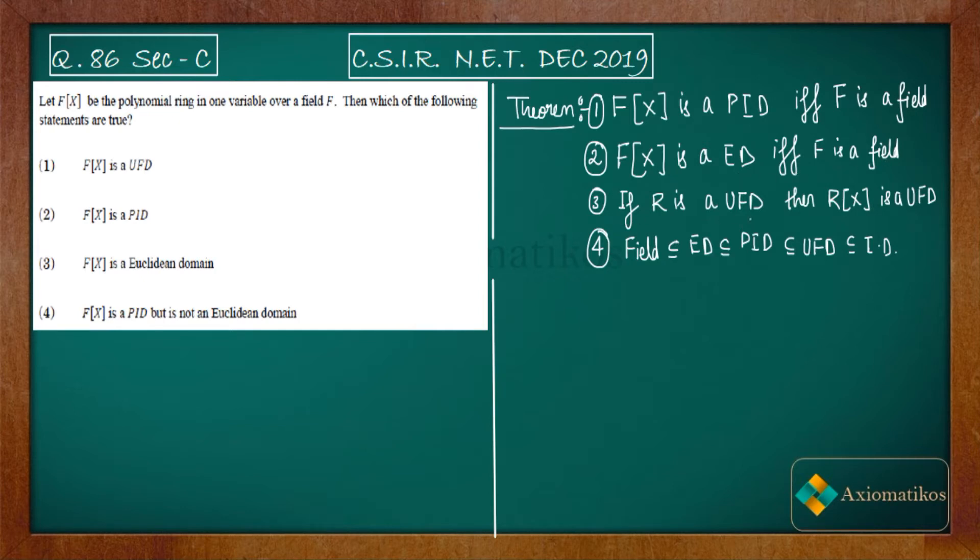If R is a unique factorization domain, then R(x) is a unique factorization domain. For the fourth one, we have a basic relation that if we have a field, then it is